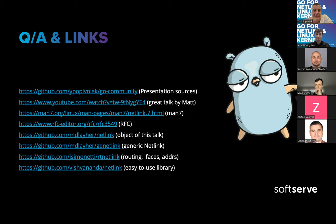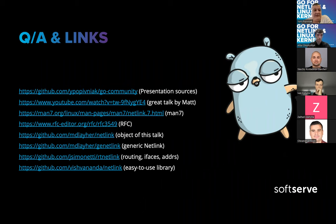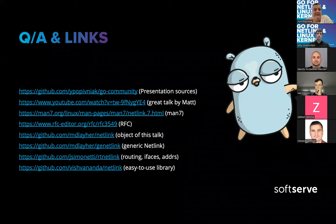On which library to start with: there are two Go Netlink libraries — Vishwananda's and Matt Lawyer's. I'd definitely recommend starting with Vishwananda's library because it's easy to use — that's exactly the path I took. It works well, but the problem was when we started dealing with Wi-Fi and 802.11, we had to use something else. That's why we switched completely to Matt's Netlink library and built everything else on top of it.